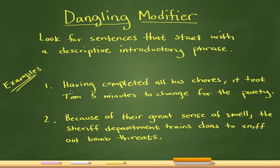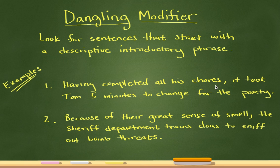Let's look at the first example. It says: 'Having completed all his chores, it took Tom five minutes to change for the party.' If you notice, there is an introductory descriptive phrase: 'Having completed all his chores.' What you want to ask yourself is who in this sentence has completed all his chores, because whatever shows up right after the comma has to be the person, place, or thing that has completed all his chores.